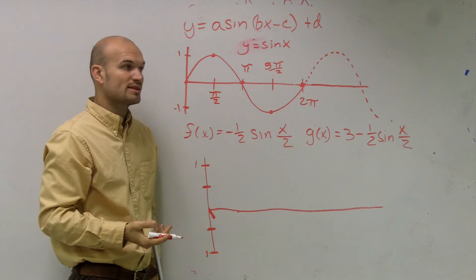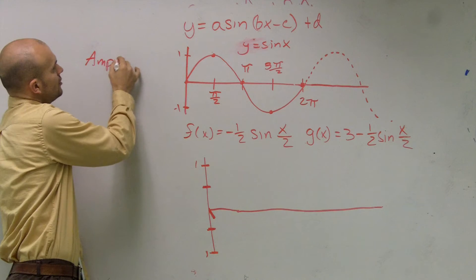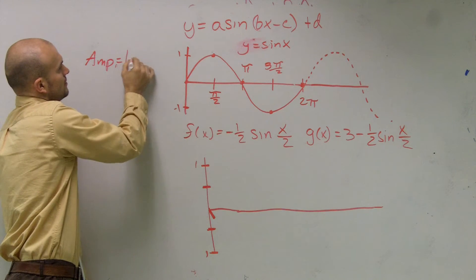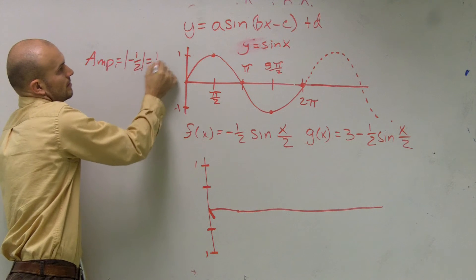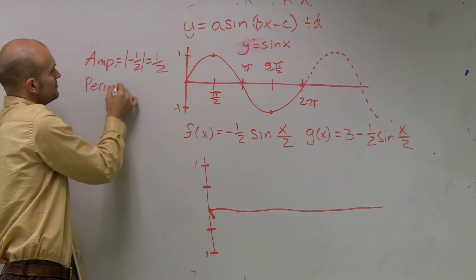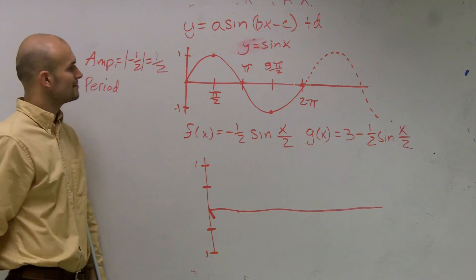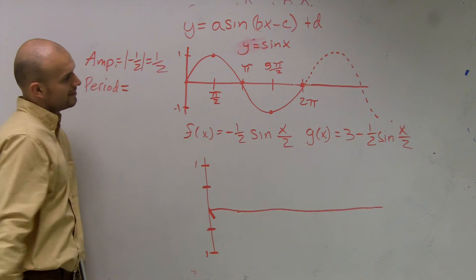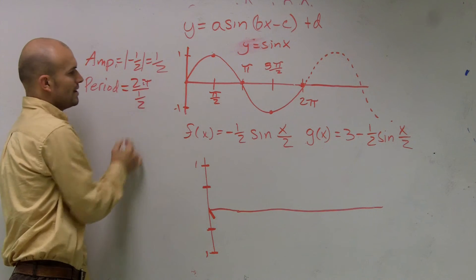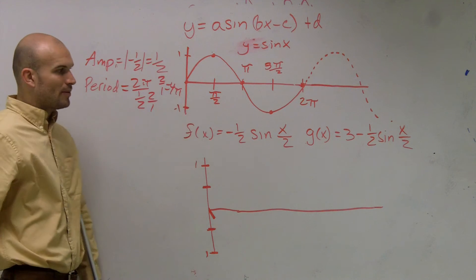Well, it's helpful to figure out what the period is. So we said the amplitude, remember, is the absolute value of your a, which is one-half. Now, the period is going to equal 2 pi over one-half. Multiply, equals 4 pi.